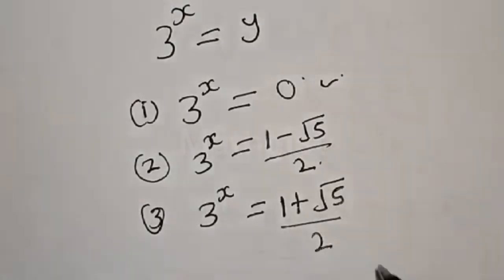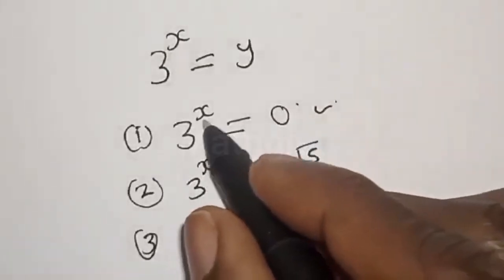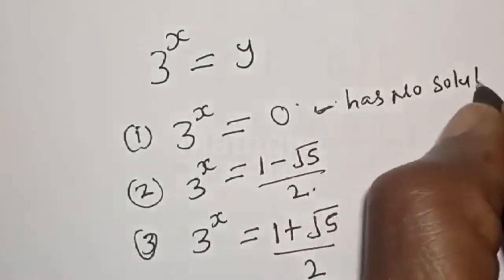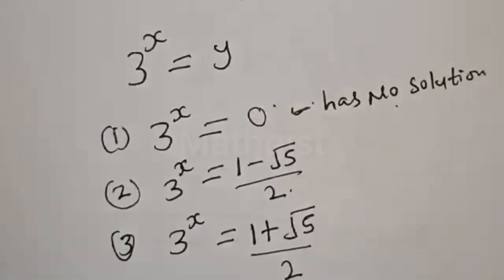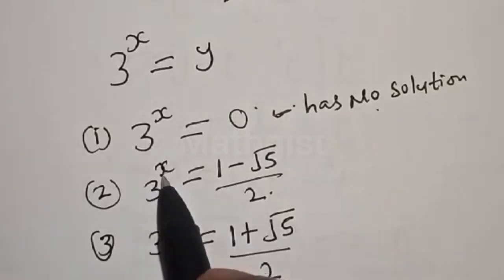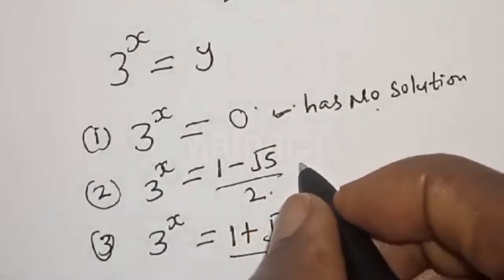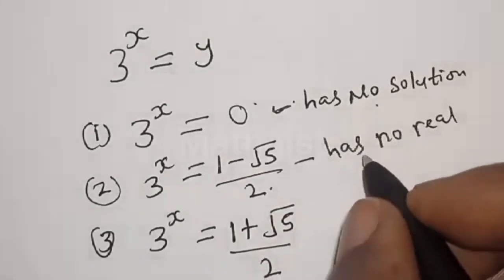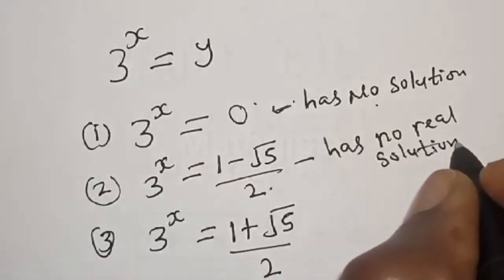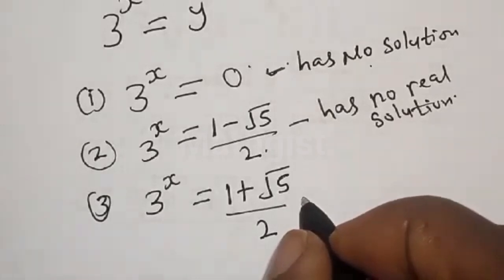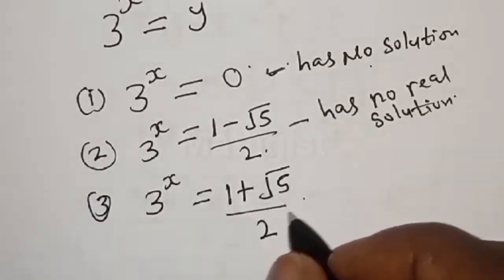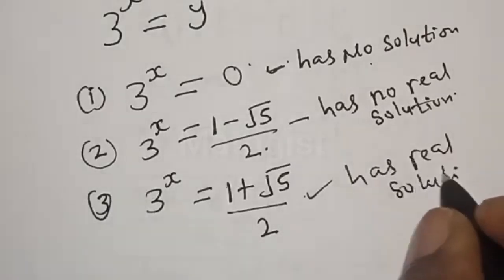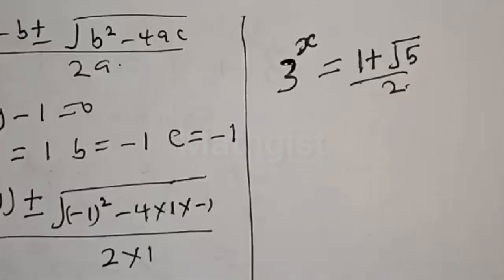Now, recall that y equals 3 raised to power s. The case 3 raised to power s equals 0 has no solution, since an exponential can never equal zero. The case 3 raised to power s equals 1 minus root 5 over 2 also has no real solution, because 1 minus root 5 over 2 is negative, and an exponential is always positive.